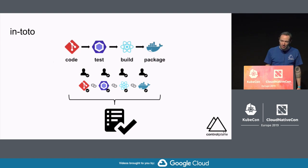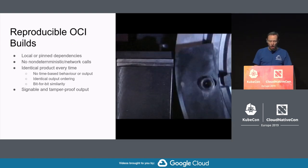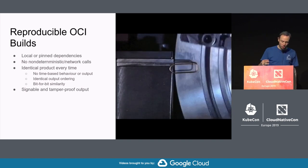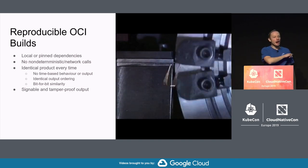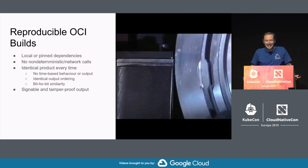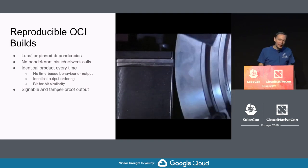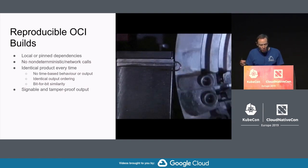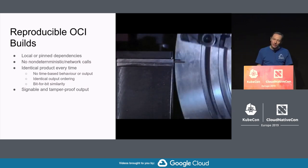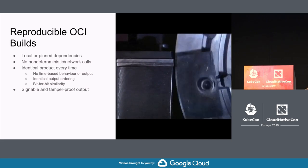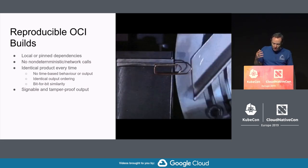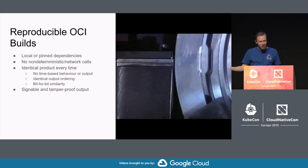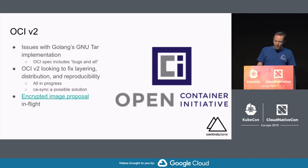To achieve this property of reproducibility for OCI images, we require local or pinned dependencies, no non-deterministic network calls or any non-determinism in general, and of course an identical product every time — no time-based output, identical output ordering, ultimately bit-for-bit similarity. The OCI image is addressed by a SHA-256 of its contents. Non-deterministic actions like network calls can't be identified in Docker RUN commands, so require the user to add hash validation for downloads that will fail the build on incorrect values.